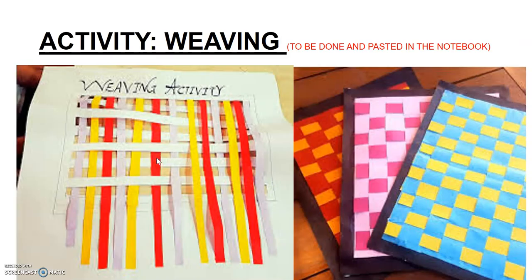There is an activity to be done by you all. I will share a video of how to do it. In this activity, you will take two different color papers, cut thin strips of each, and weave those two sets of strips together to form a mat. This mat is to be pasted in your sheet.